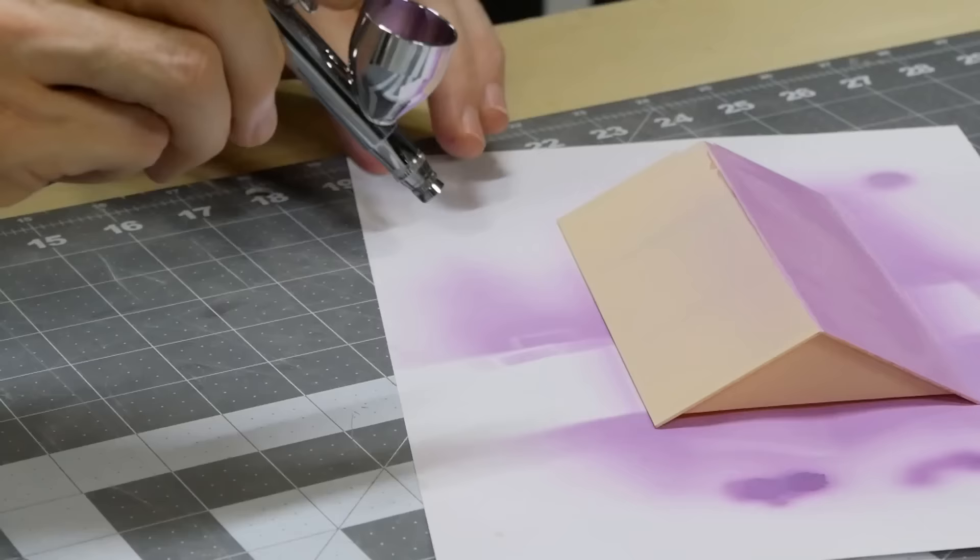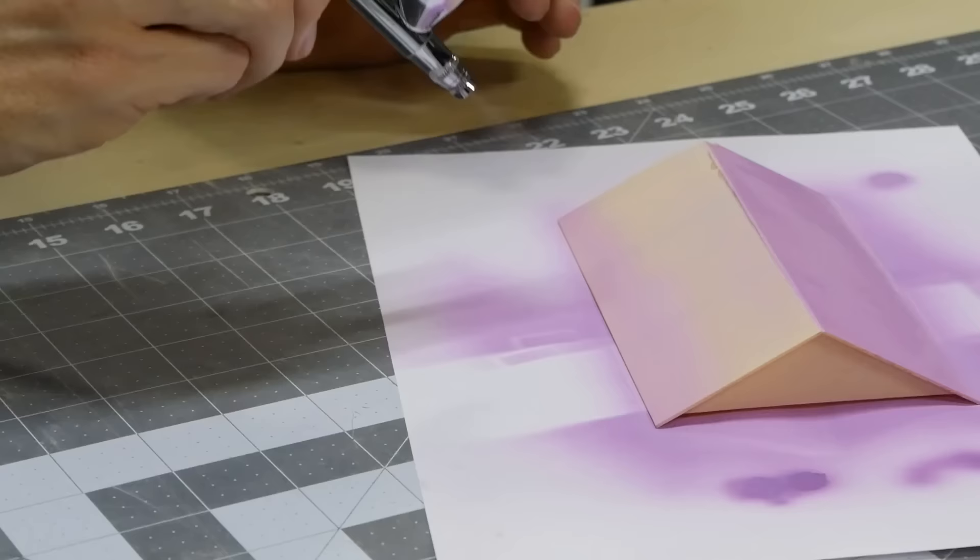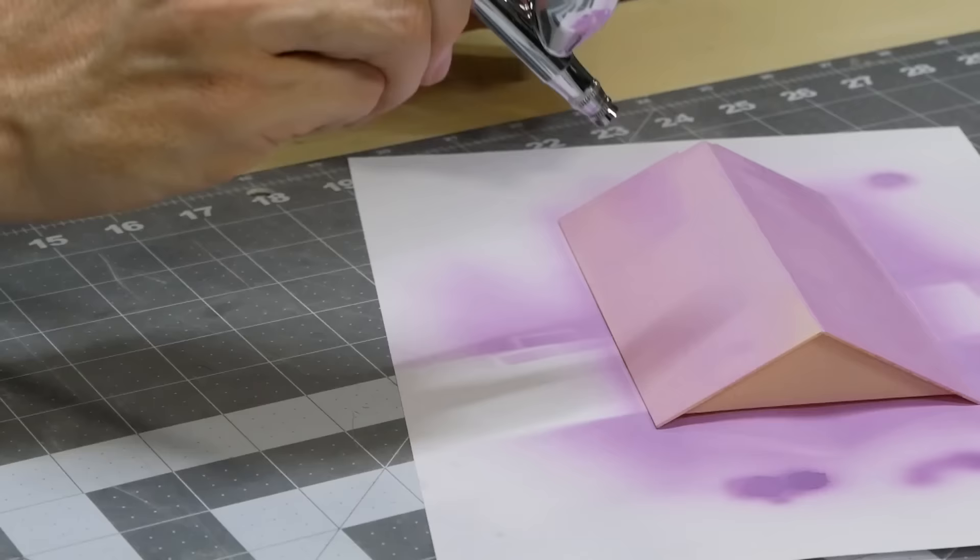It's not entirely necessary but I also paint the roof. This will be getting covered in paper later, but just in case the base color shows through the paper a little bit I paint it purple as well.